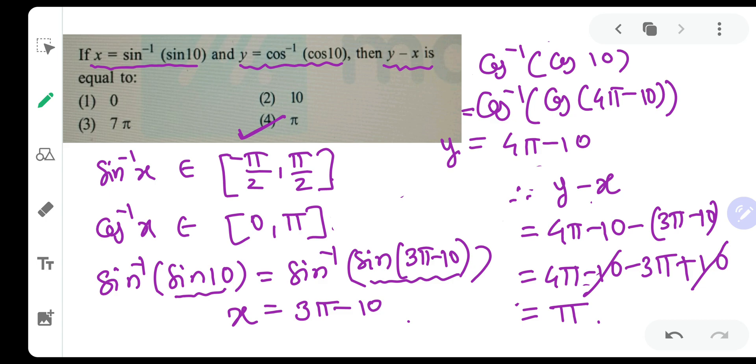Always remember that sin inverse x will lie within minus pi by 2 to pi by 2, and cos inverse x will lie within 0 to pi. And utilizing this, you can simply get your answers.